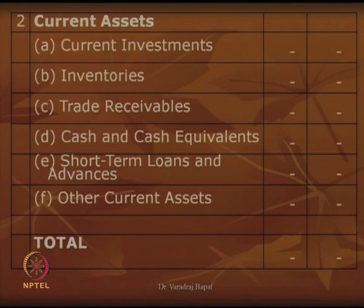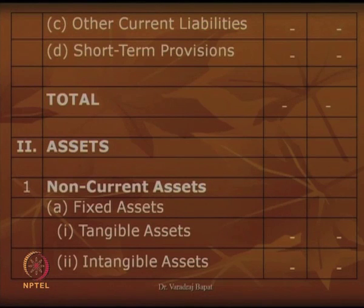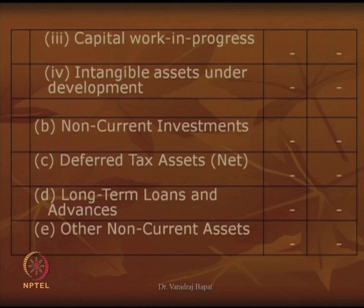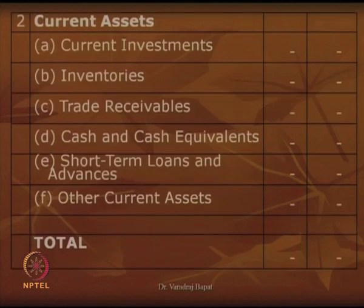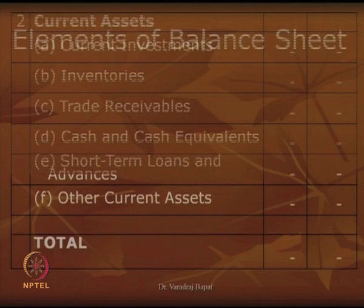So now you can see all assets were divided into two categories. Non-current assets include fixed assets, non-current investments, deferred tax assets, long-term loans and advances, and other non-current assets. In current assets you have six categories. We were discussing this format as given by company law — Schedule 6 of company law. Now let us look at each of these elements slightly in detail.